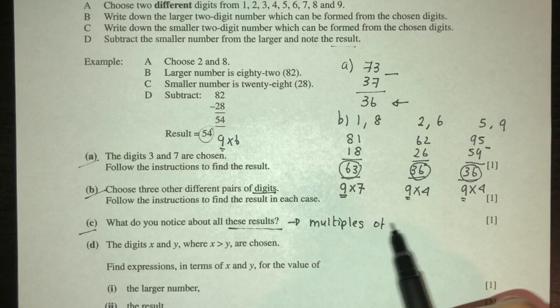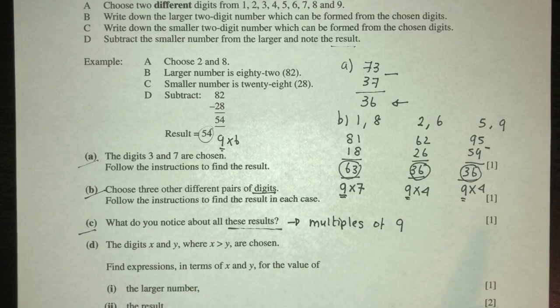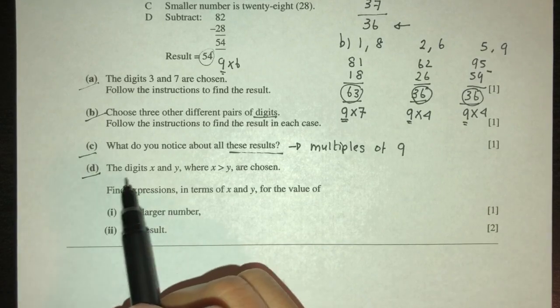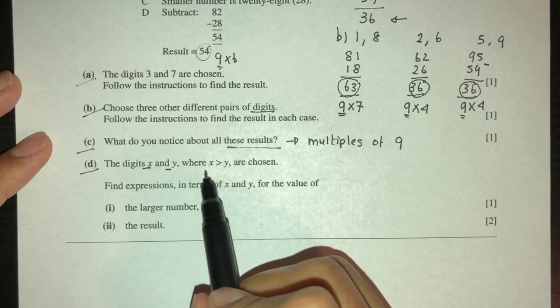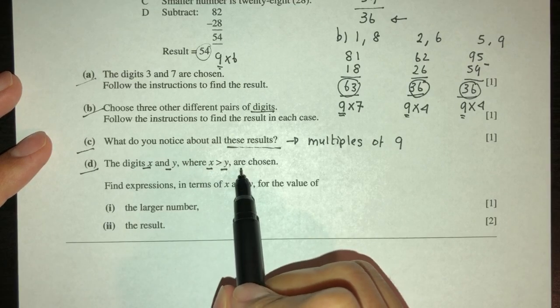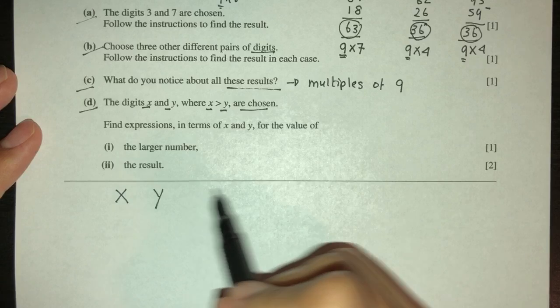So that is one of the observations that you can have. Now for part (d), this is interesting. The digits x and y, where x is more than y, are chosen. Okay, so now we have x and y where x is more - we can say bigger than y.